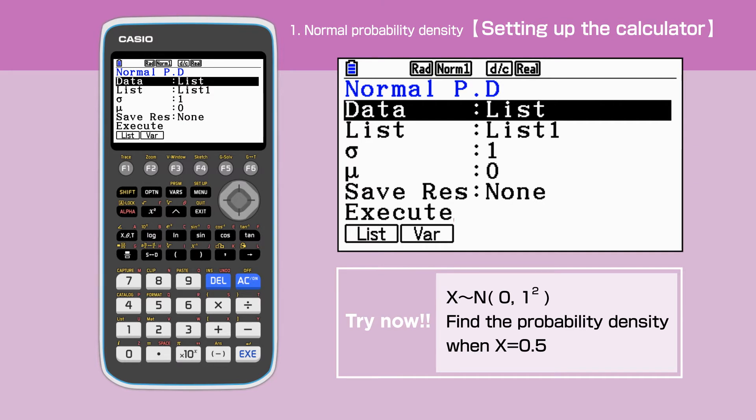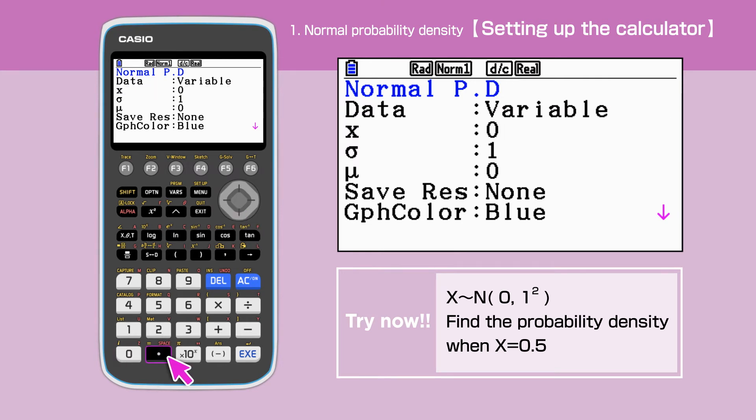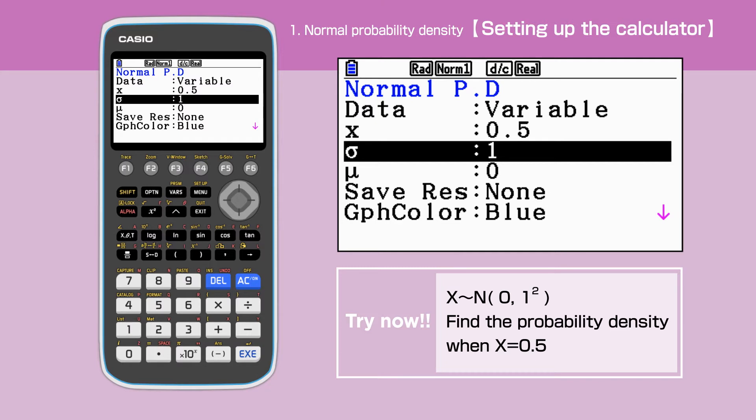Select variable by pressing F2 for the data. Enter 0.5 for x. The original setting for the standard deviation and the mean is 1 and 0 respectively for this calculator.